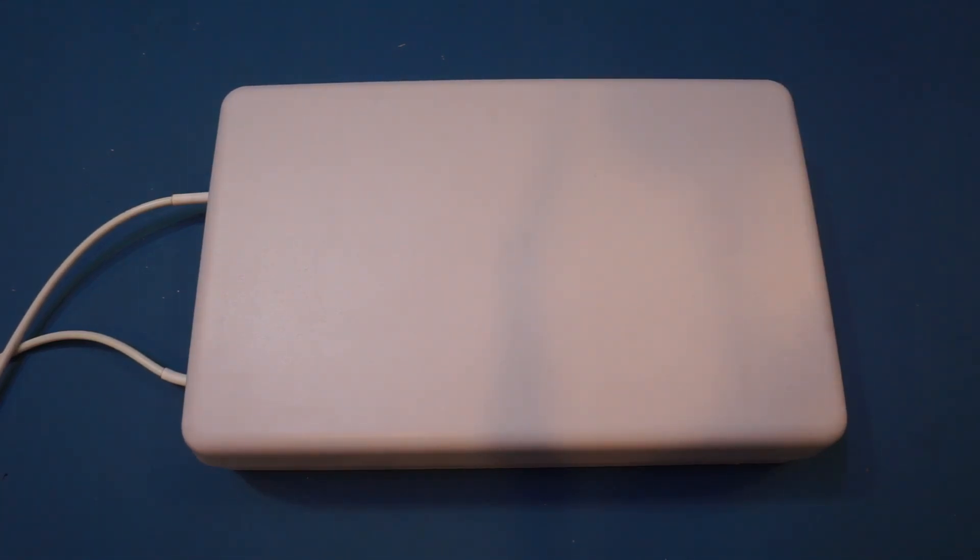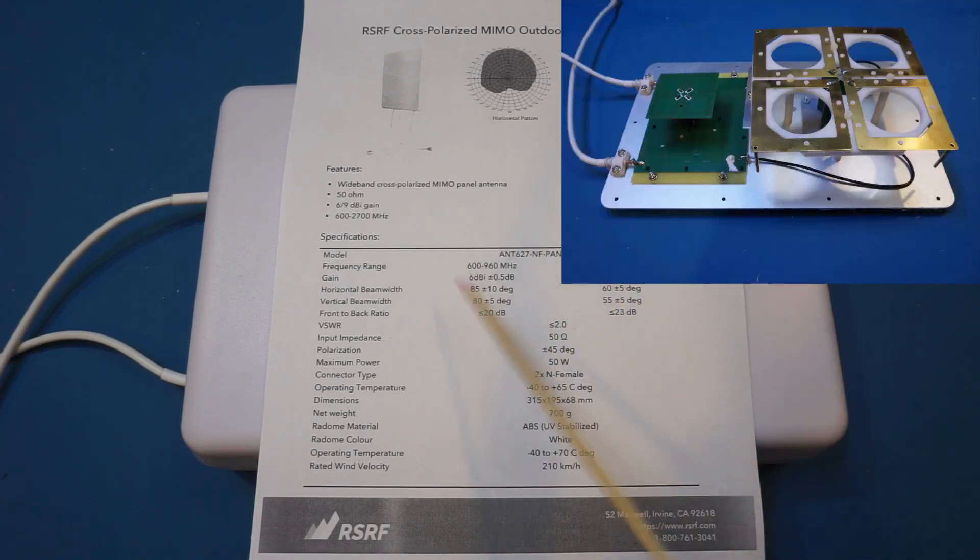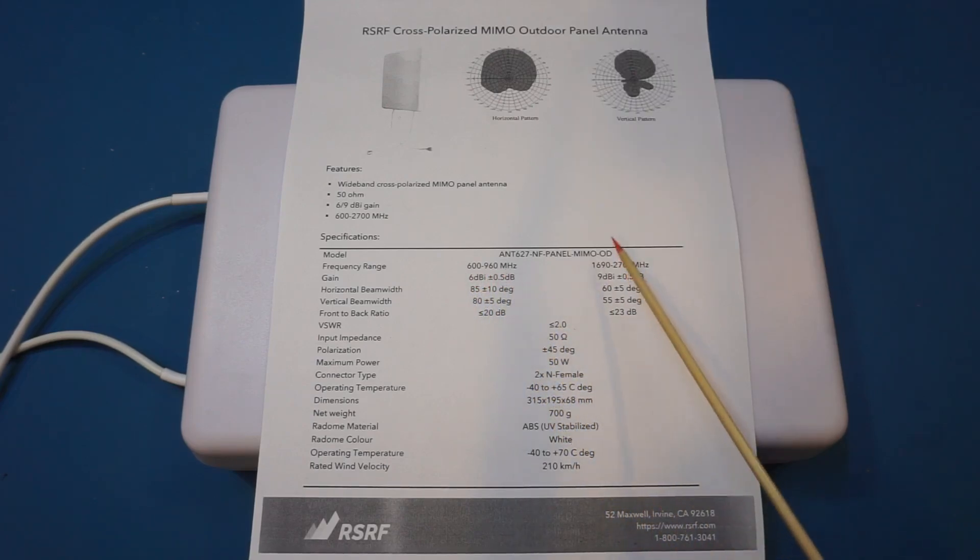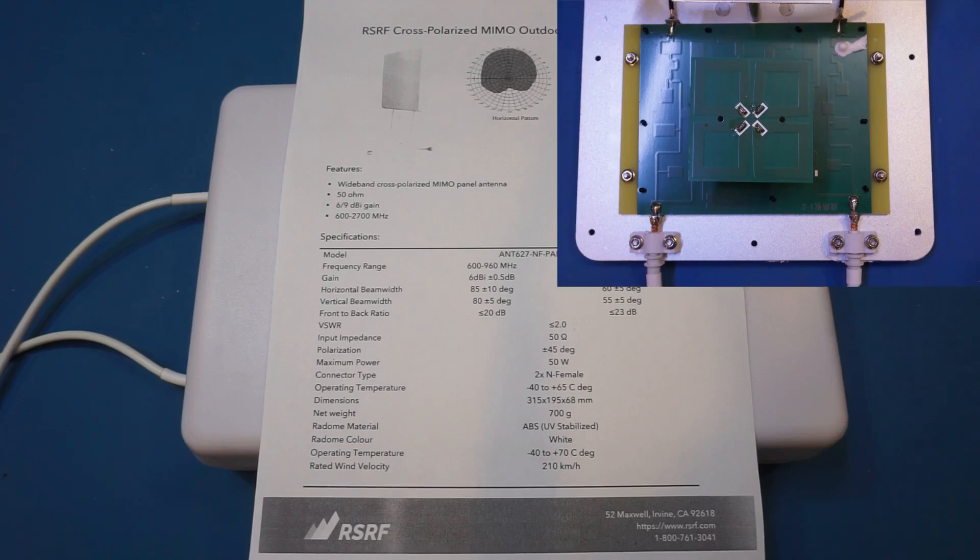Just a quick refresher on this antenna here. This is a RSRF dual band MIMO antenna. It essentially consists of two sets of antennas, one operating between 600 MHz and 960 MHz, the other one operates on a frequency band of 1690 MHz to 2700 MHz. Each set of these antennas is made up with two diagonally placed broadband dipole antennas and therefore they are orthogonally polarized.